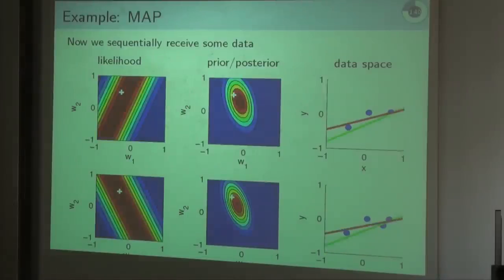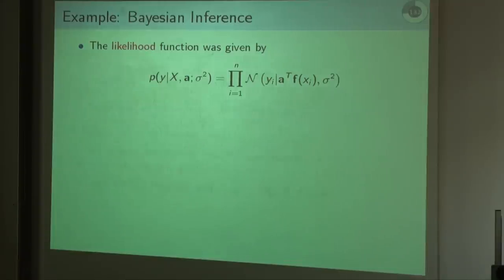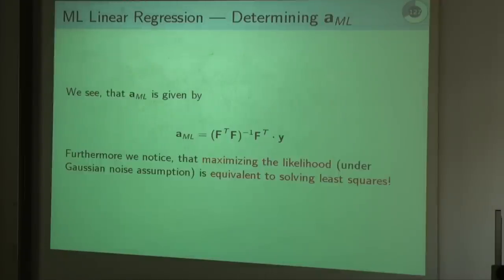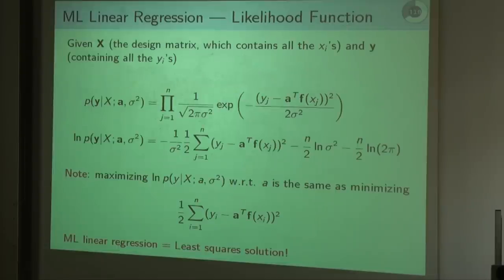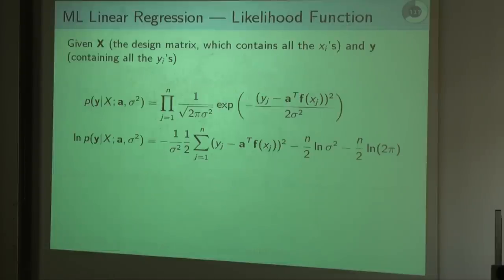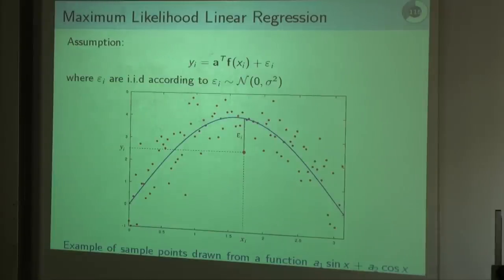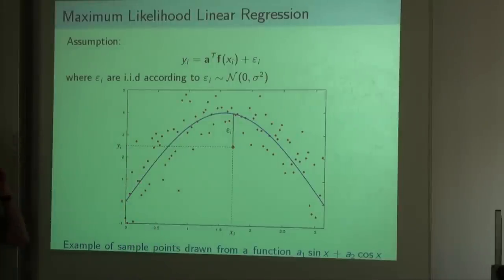Today we are going to talk about radial basis function networks, but before, let me skip back a little bit into Bayesian linear regression. So the room is going to fill up a little bit. I want to repeat what we did there. Yeah, let's go into maximum likelihood again. Let's start here.